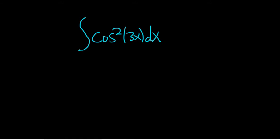Integrate cosine squared of 3x solution. So there's an identity you can use to do this problem. Recall cosine squared of x is equal to 1 plus cosine 2x over 2.